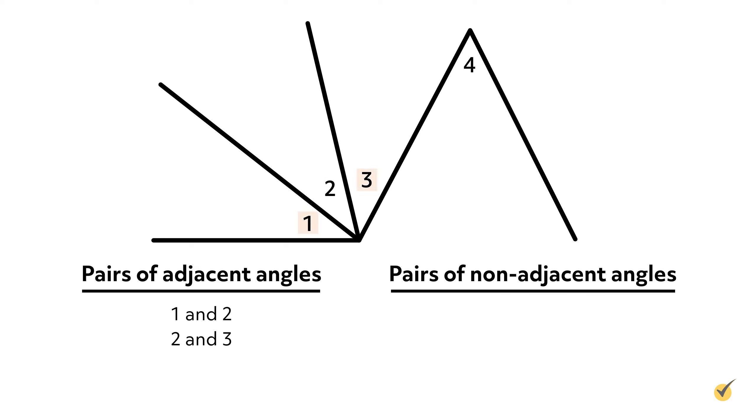But what about angles 1 and 3? While these angles still share a common vertex, they have no side in common, so they are not adjacent.